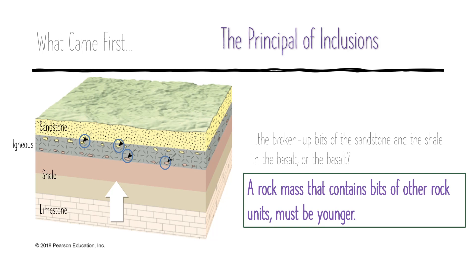Well, if you were thinking back to the idea behind the principle of cross-cutting relationships, you may have guessed that the sandstone and shale had to be formed before they could have gotten broken and stuck in the igneous rock. The other option is that small chunks of the shale and sandstone formed after that igneous rock layer formed. And that doesn't seem very likely, right? Because they're on either side of it.